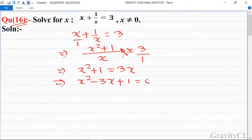Now we use the quadratic formula. So here a is equal to 1, and b is equal to minus 3, and c is equal to 1. So therefore x is equal to minus b plus minus root under b squared minus 4ac upon 2a.